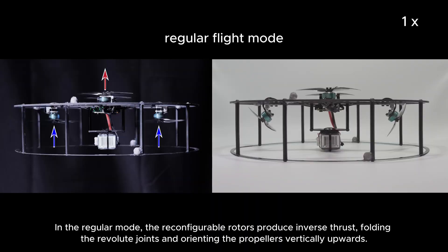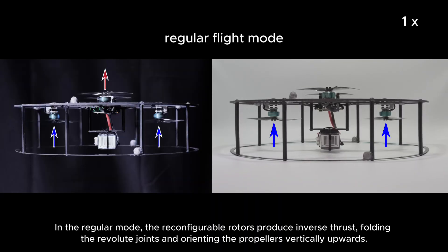In the regular mode, the reconfigurable rotors produce inverse thrust, folding the revolute joints and orienting the propellers vertically upwards.